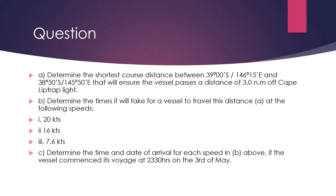The question is in three parts. Part A: determine the shortest course and distance between position 39°S, 146°15'E and 38°50'S, 145°50'E. But you must ensure the vessel passes at least three nautical miles off Cape Liptrap Light. The shortest distance doesn't necessarily mean the safest distance. On the ship, the shortest distance is commercially most viable, but you also have to focus on the safest distance — not always the shortest. That is what this question teaches.